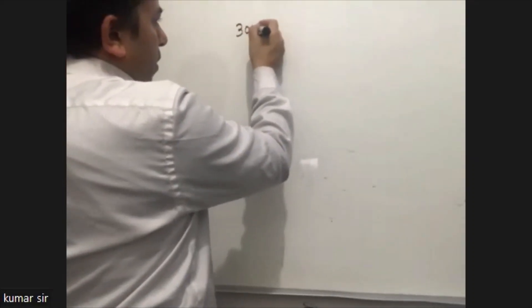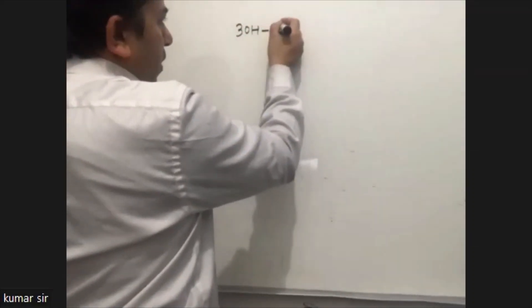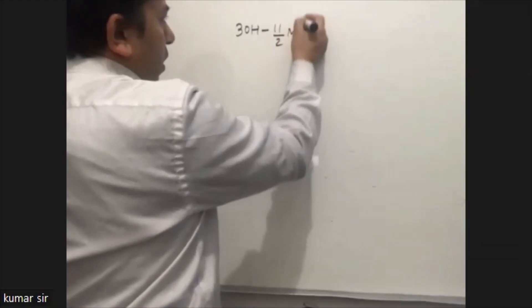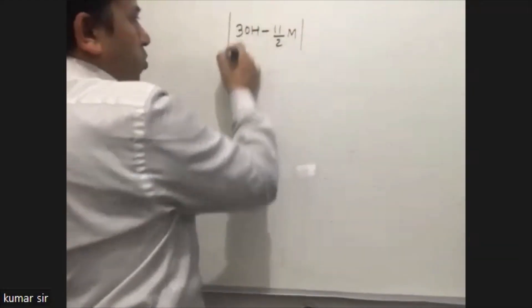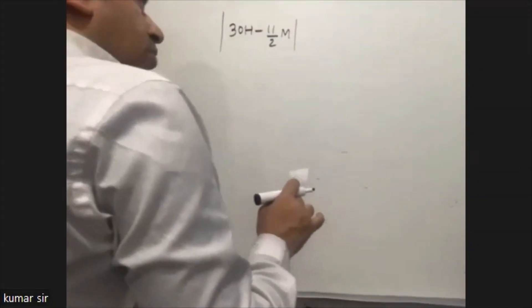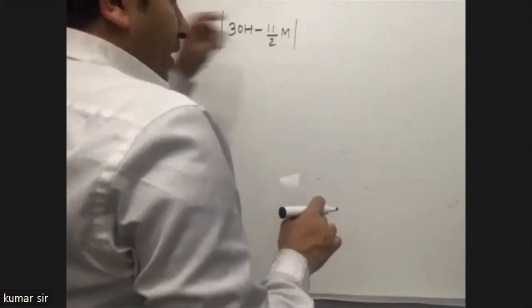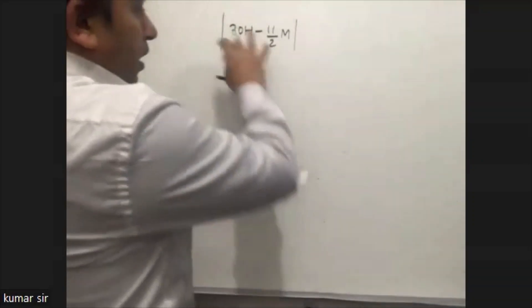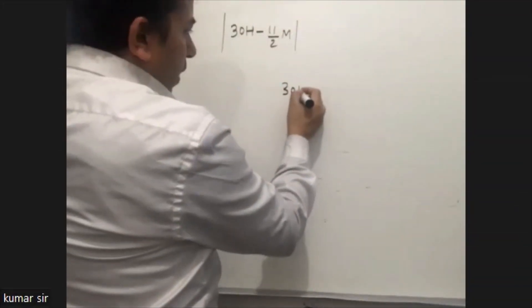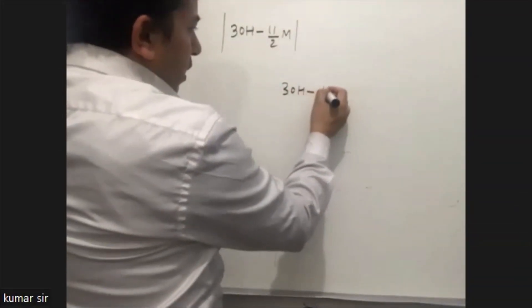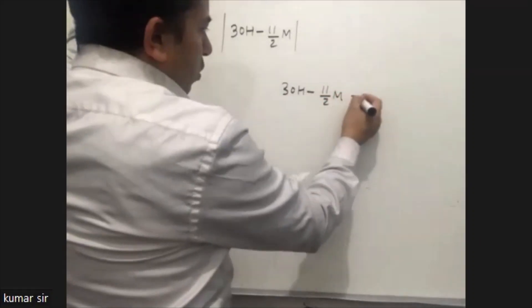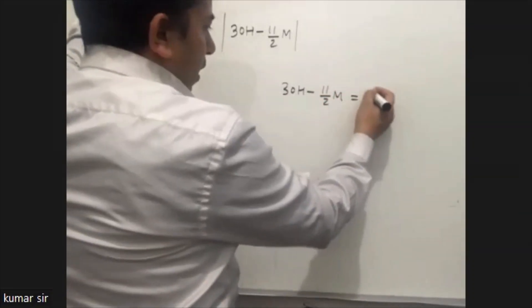30y minus 11 by 2 yam, absolute value. Now, if we set 30y minus 11 by 2y equal to zero, we can solve this problem from that direction.